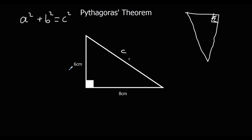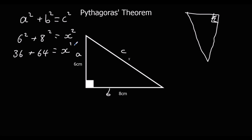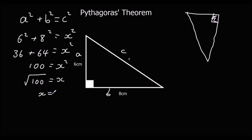We know the relationship: this side squared plus this side squared equals the long side squared. These two are A and B — it doesn't matter which way round. So 6 squared plus 8 squared equals x squared. 6 squared is 36, 8 squared is 64, and 36 plus 64 is 100. So 100 equals x squared. To find x, we take the square root — the opposite of squaring. The square root of 100 is 10, so x is 10 centimeters.